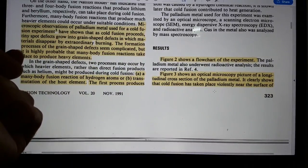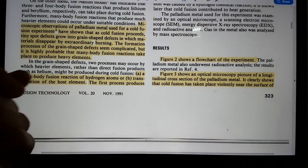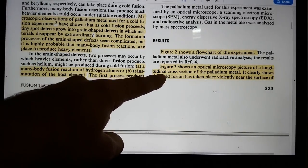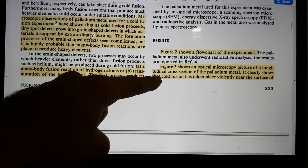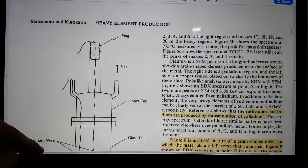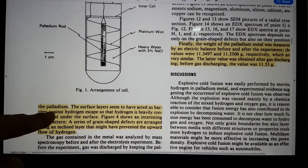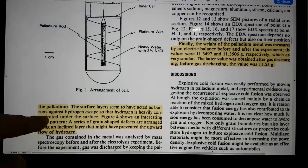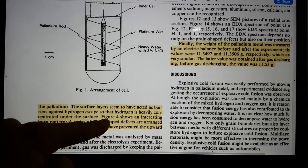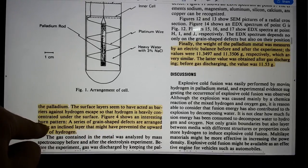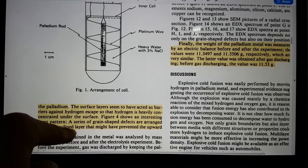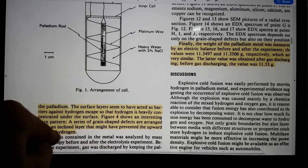And so that's a shock wave both of sound and pressure that will go into the metal and so forth. So it's a really ingenious and simple experiment and he repeated this a number of times. So the results, he has a flow chart of the experiment shows how that it works. So like I said it's a very well described experiment. Figure three shows optical microscopy picture of long cross section of palladium metal. It clearly shows that cold fusion has taken place violently near the surface of the palladium. The surface layers seem to have acted as barriers against hydrogen escape. So hydrogen is heavily concentrated under the surface.